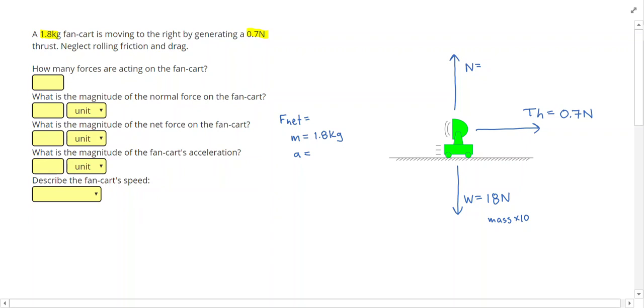Then I know that since the fan cart is not accelerating up or down, the normal force and the weight are going to balance each other out. So normal force is 18 N as well. Alright, that means the only force that is left over is going to be my thrust which is 0.7 N and that is my net force as well.